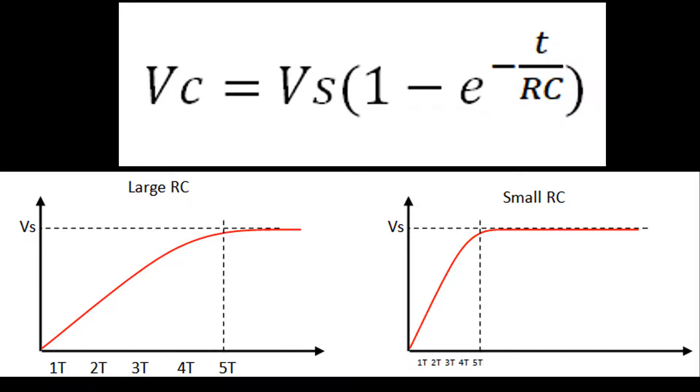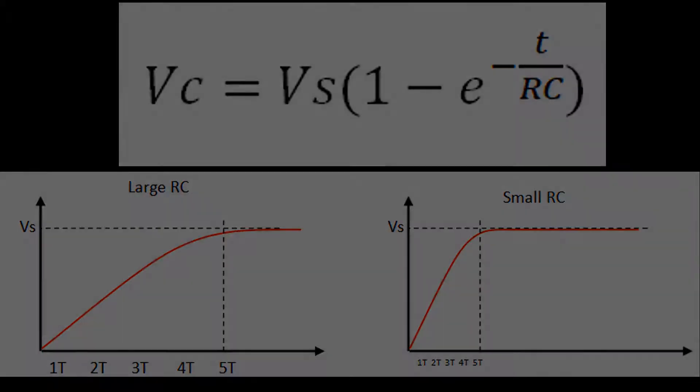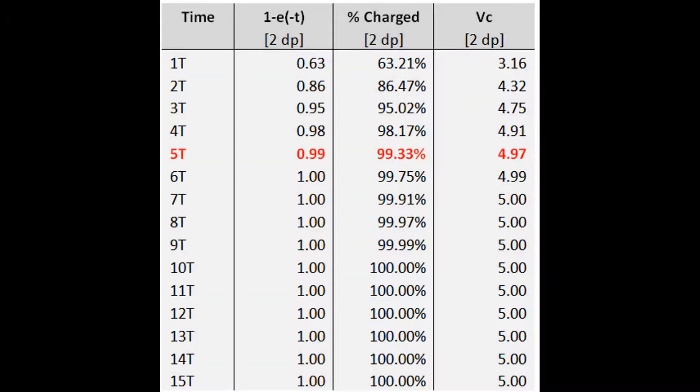If we now study the 1 minus E to minus T expression, we can find the following. Here we have a table listing our time periods and the corresponding percentage of voltage across the capacitor. It is clear that most charge happens early, from 1T to 4T. Past 5T the change is considerably smaller. By the time we get 10T we can see 100% charge.